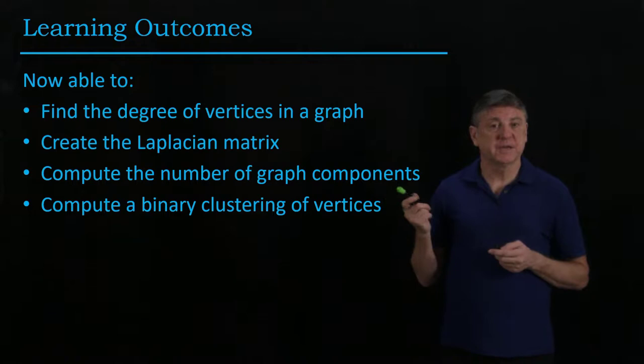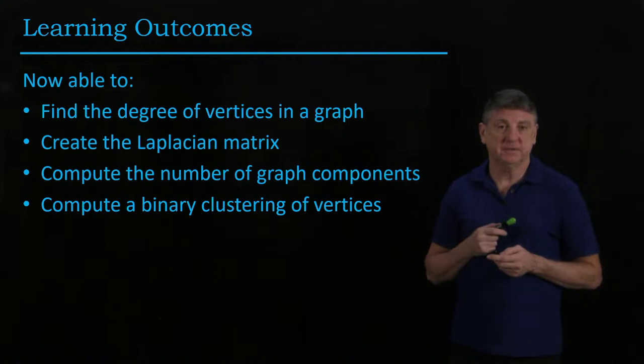And if there's, for example, only one component but there are two distinct binary clusterings, we can find those using the Fiedler vector.